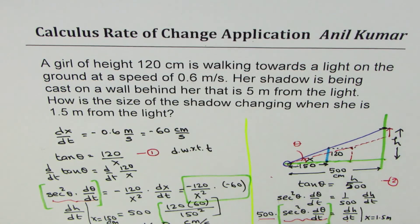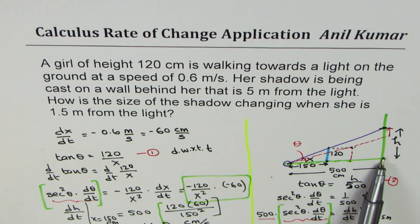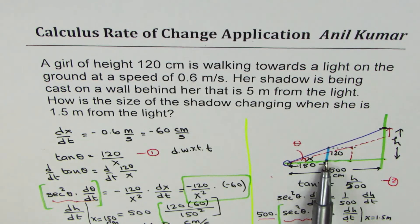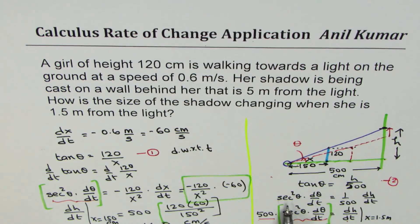So the idea is we kind of work with simultaneous equations. We wrote two equations in terms of theta, one for the position of the girl, the other with respect to the wall. And we figured it out that the rate of change of position with respect to the girl and that with respect to the wall is 500 times since that is 500 away. So that is how we got our result.